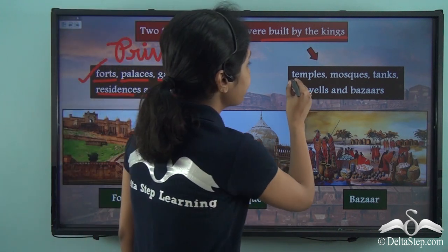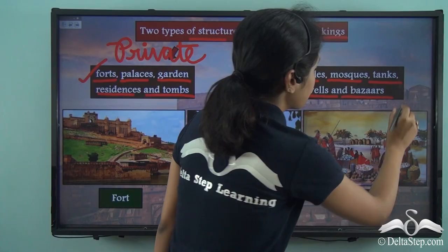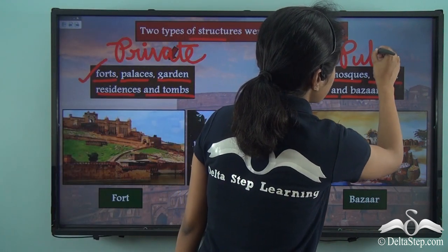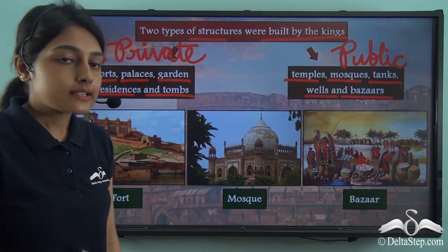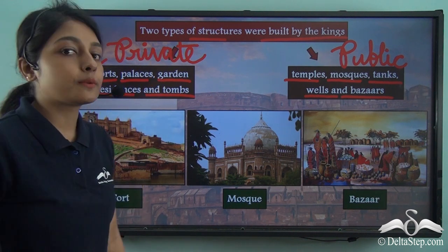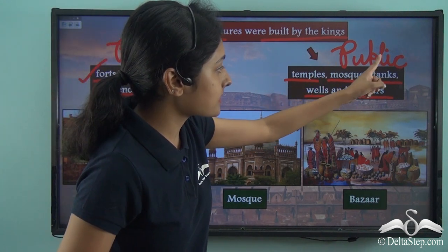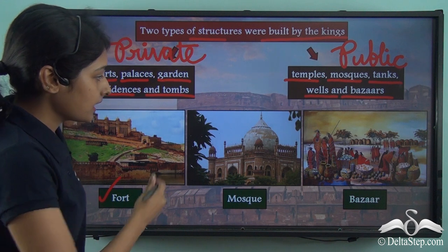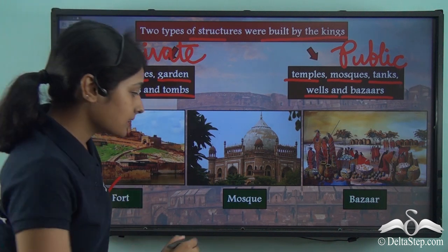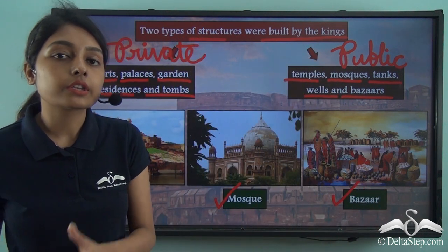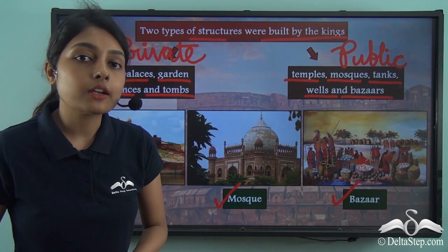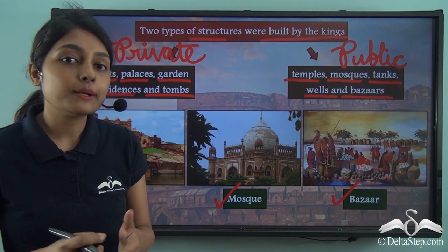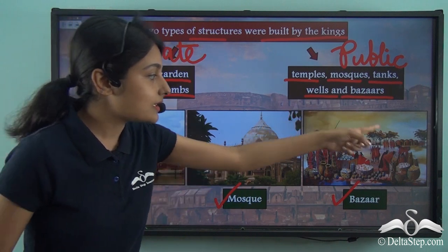On the other hand we have the construction of temples, mosques, tanks, wells, and bazaars — these were meant for the public. A fort is meant for the king alone, but a mosque or a bazaar is not restricted to the royal family. A mosque is a place where people gather to offer prayers to God, and a bazaar is a place where people gather to perform trade, to buy and sell things. So these were public places.